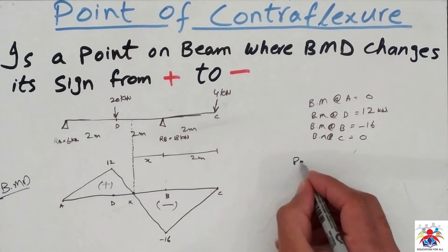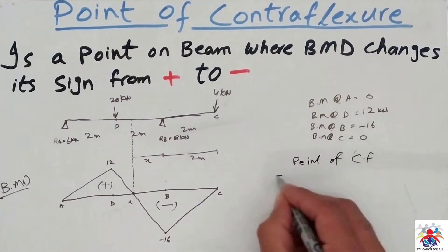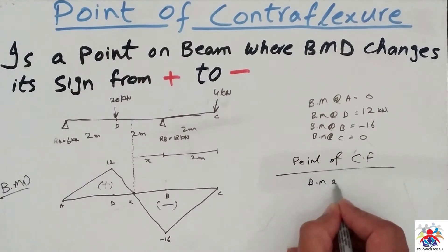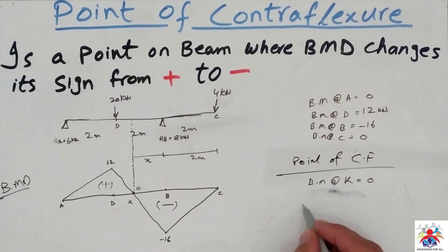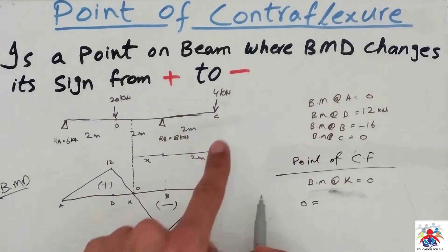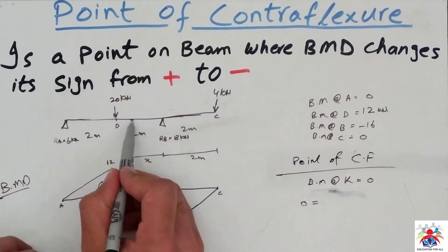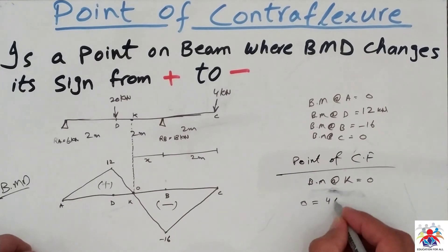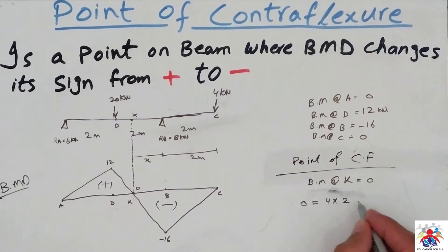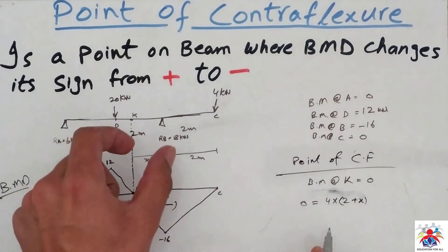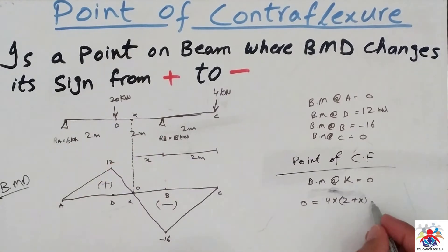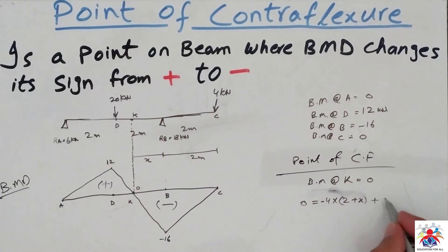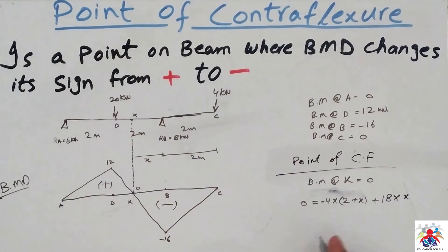To calculate the point of contraflexure, we set bending moment at point K equal to zero. The equation is: zero equals 4 multiplied by (2 plus x) — where 2 is the distance from C to B and x is the unknown distance from B to K — minus 4 kilonewtons acting downwards, plus 18 kilonewtons acting upwards multiplied by x. So: 0 = minus 8 minus 4x plus 18x.